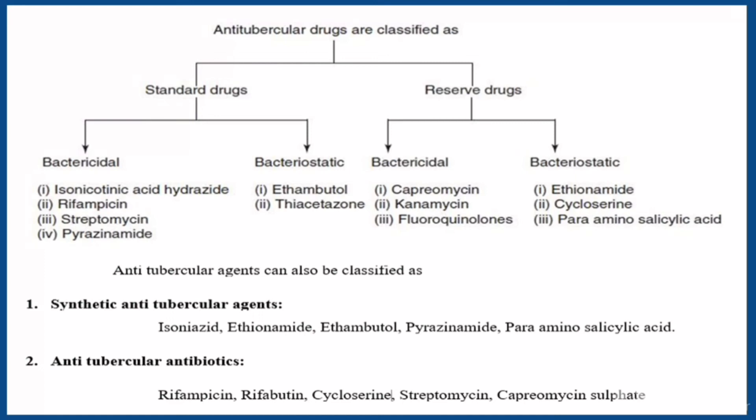We will now see the third classification type. Here we have two types: synthetic anti-tubercular agents and anti-tubercular antibiotics. Under synthetic anti-tubercular agents, examples are isoniazid, ethionamide, ethambutol, pyrazinamide, and para-amino salicylic acid. Under anti-tubercular antibiotics, examples are rifampicin, rifabutin, cycloserine, streptomycin, and capreomycin.